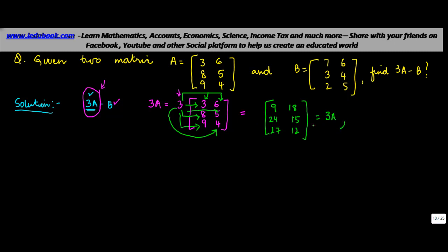The value of B we already know. So if you have to find 3A minus B, what do we do? We put in first the value of 3A which we've got here, and from this we will subtract B which is [7, 3, 2, 6, 4, 5].